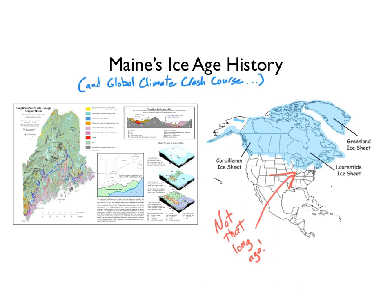We're going to talk about what's called the surficial geology of Maine — that means everything that's on top of the bedrock. So we're no longer talking about tectonics and things like that, but all the stuff that happens on top of it. And we're going to talk about these huge ice sheets that used to cover much of North America.